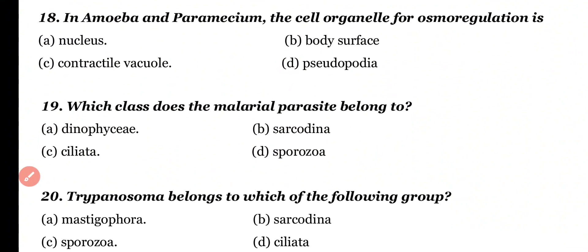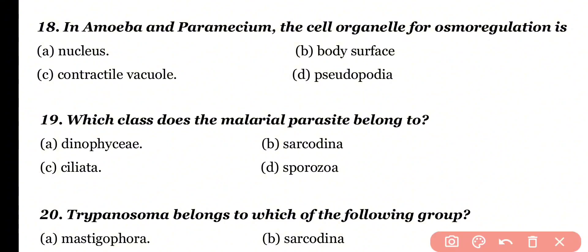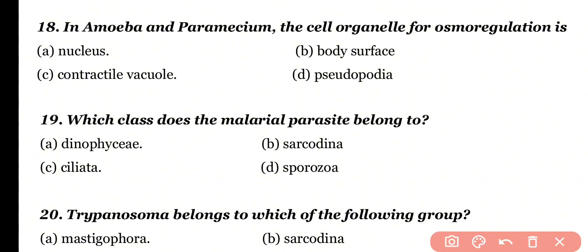Question number 18: In Amoeba and Paramecium, the organelle for osmoregulation is — nucleus, body surface, contractile vacuole, or pseudopodia? Correct answer is option C. In Amoeba and Paramecium, the osmoregulatory organelle is the contractile vacuole.